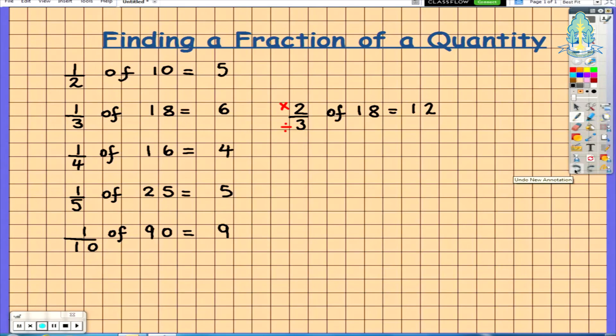Another example is 3 quarters of 16. So again, the children will be taking 16, the quantity, dividing by 4 and this time multiplying by 3. So 16 divided by 4 equals 4, and 4 times 3 equals 12.